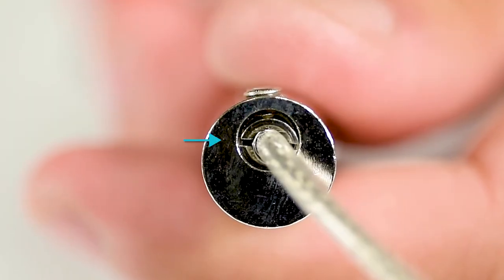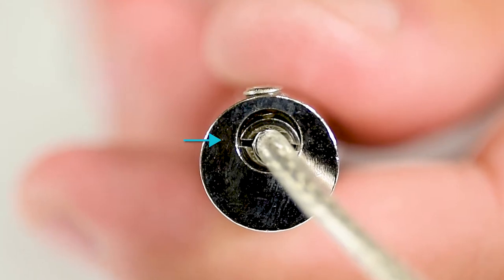Ensure that the split in the ferrule is aligned 90 degrees from the M4 set screw.